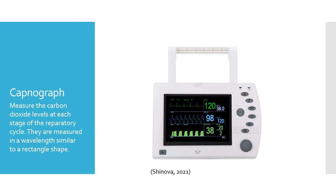When using a capnograph, it can detect lots of different equipment malfunction problems. While monitoring CO2 levels, it can alert staff to other complications that can occur at the endotracheal site, such as a leaking, deflated, kinked, or obstructed tube.